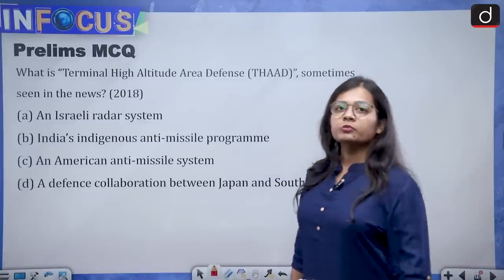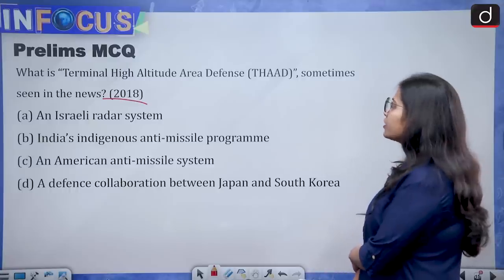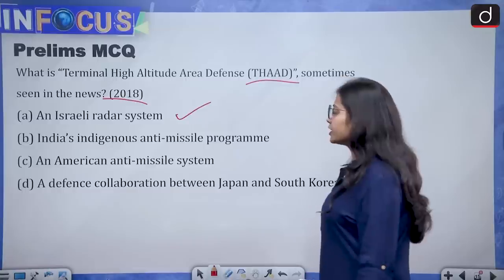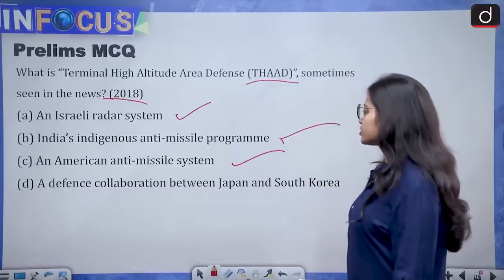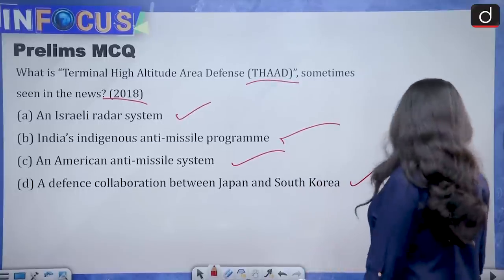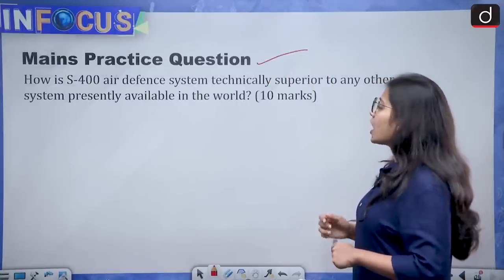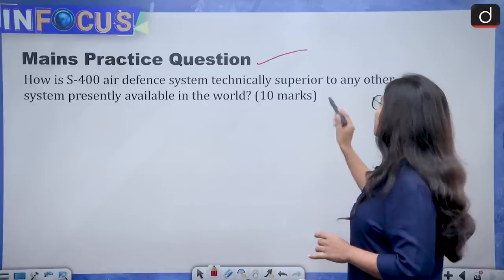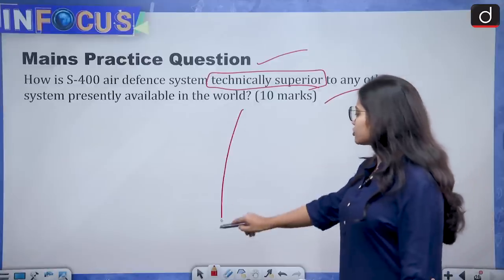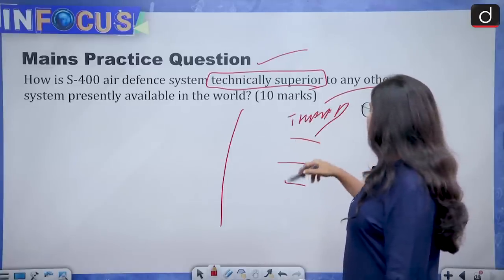For the prelims MCQ — this is a PYQ asked by UPSC in 2018: 'What is Terminal High Altitude Area Defense (THAAD) sometimes seen in the news?' The options are: Israeli radar system, India's indigenous anti-missile program, American anti-missile system, or a defense collaboration between Japan and South Korea. This is how questions are asked from the defense technology section. For the mains practice question, you can write about how the S-400 air defense system is technically superior to other systems presently available, comparing it with America's THAAD or Israel's Iron Dome.